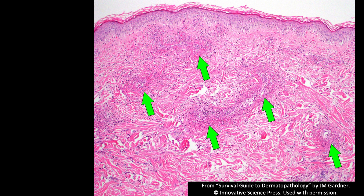To finish up, let's talk about leukocytoclastic vasculitis, something you may encounter. It's important to recognize from low power — vasculitis usually presents as collections of neutrophils or blobs of red fibrin. You may not even be able to tell at low power that they're around vessels because the vessel may be so destroyed. Anytime I see an aggregate of pink fibrin with some neutrophils or nuclear dust, I'm going to look for vasculitis.